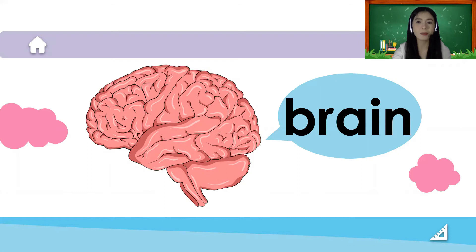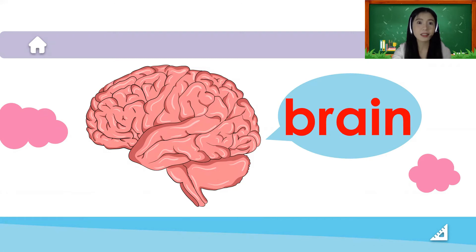Let's spell the word brain: B-R-A-I-N. The brain makes the whole body work — it keeps us able to think and feel. That is the use of our brain.